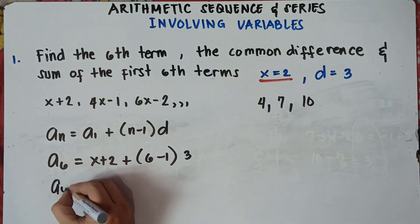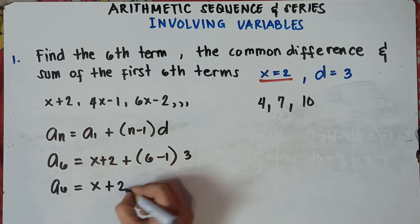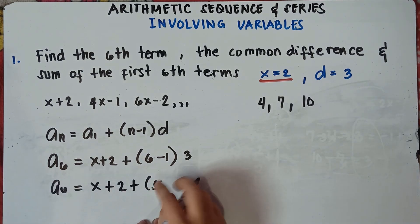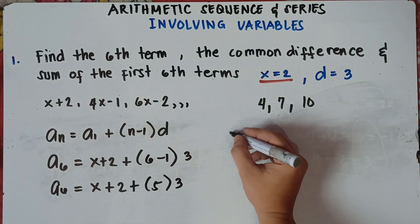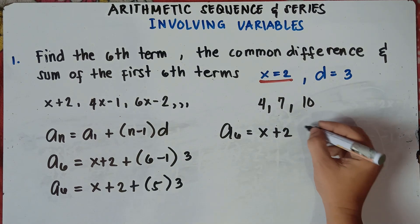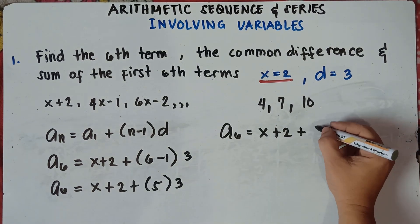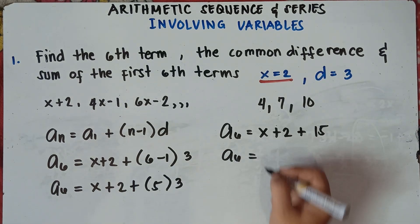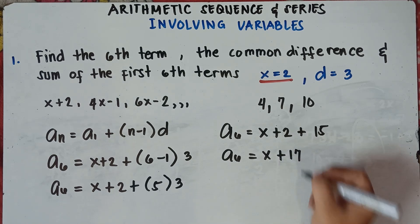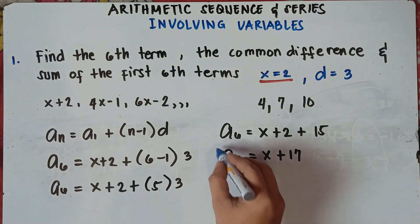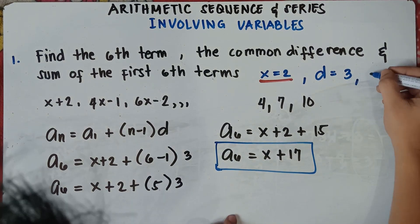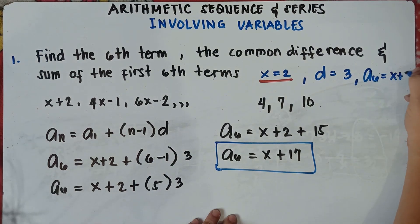Simplifying: a sub 6 equals (x plus 2) plus 5 times 3. So a sub 6 equals (x plus 2) plus 15. Combining constants: 2 plus 15 equals 17. Therefore the sixth term is x plus 17.